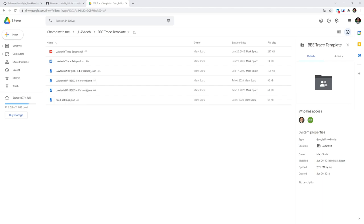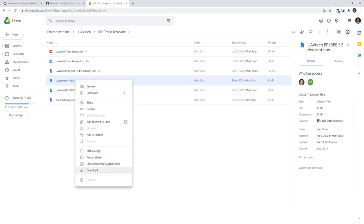In addition to the black box log viewer you're going to want the UAV Tech black box trace template. Now you can download that from this webpage I'll put a link to this down in the video description and you're going to want the 3.5 version which also works on 3.6 and you can just right click on that and download it.